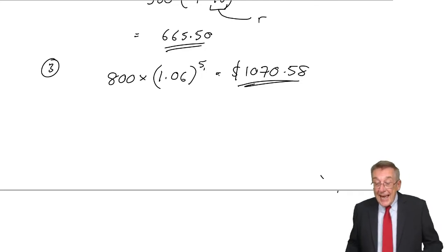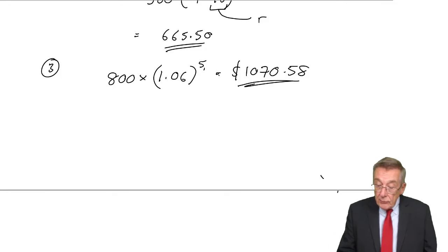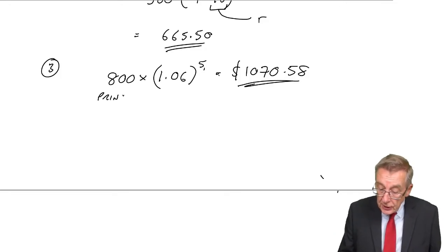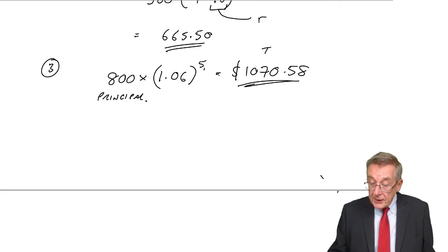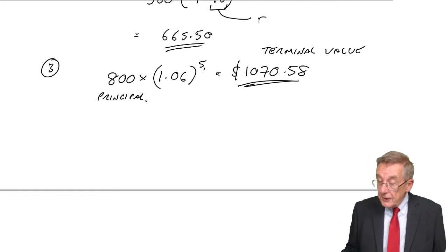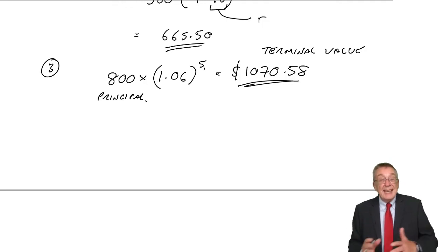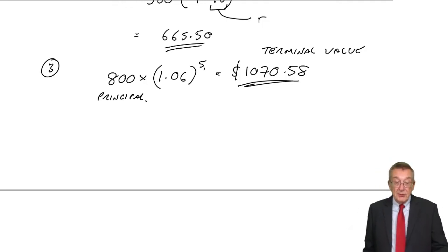That's compounding. It's adding on interest. The original, the principal, the initial amount was 800. The 1070 is the terminal value, the value at the end of the period after adding on interest. And the interest is getting interest. It's compound interest.